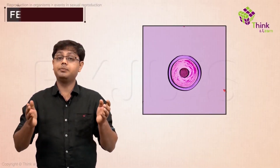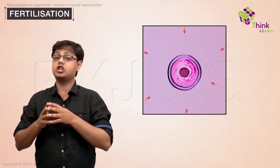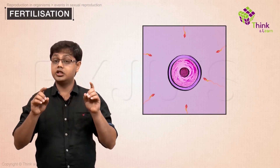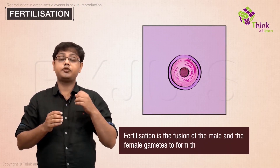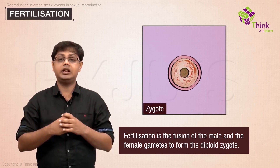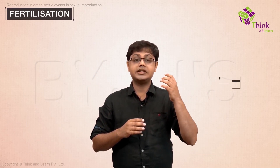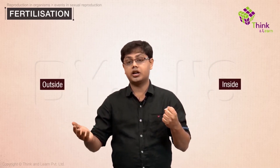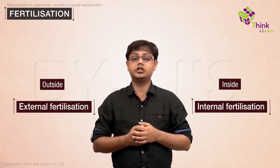All the gamete movement that happens in pre-fertilization leads to the primary aspect of sexual reproduction — fertilization or syngamy — that is, fusion of the male and the female gametes to form the diploid zygote. Based on whether fertilization takes place inside or outside the organism, it can be classified into two types: external fertilization and internal fertilization.